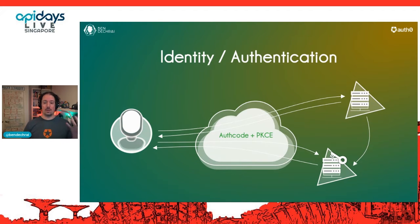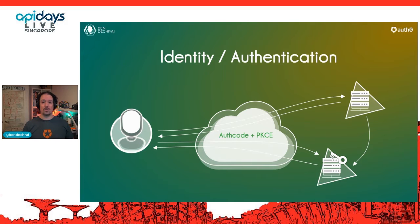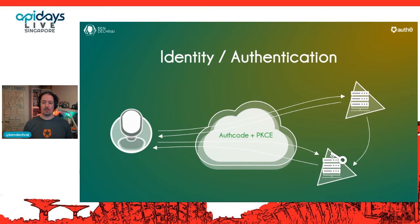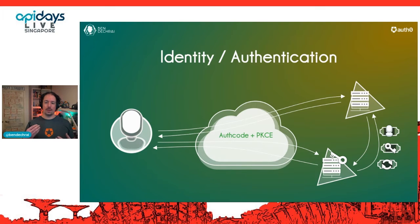A request goes to the resource server. The resource server says 'hey, you need to log in' and redirects you to the identity server. The identity server logs you in and sends a code back to the resource server. The resource server can use this code to make a request to the identity server to get some tokens — to know something about the person who just logged in. This closes the security loop, making sure tokens come directly from the identity server back to the resource server.